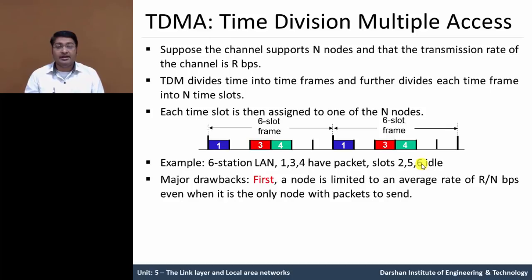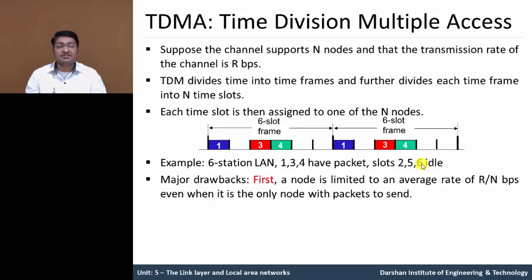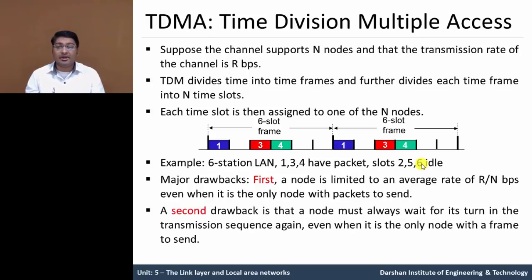However, there are two drawbacks. The first drawback is that a node is limited to an average rate of R/N bits per second, even when it is the only node with packets to send. The second drawback is that the node must always wait for its turn in the transmission sequence, even when it is the only node with a frame to send.